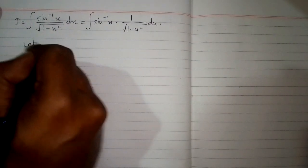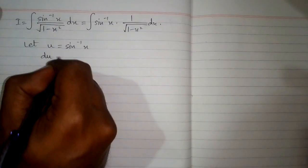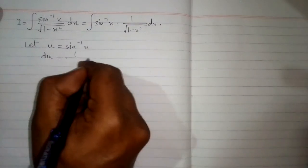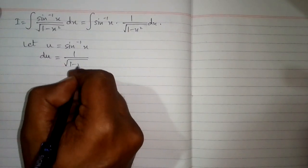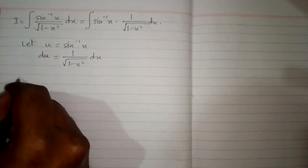Now let u is equal to inverse sine of x, so the differential du is equal to the derivative of inverse sine of x, which is 1 upon square root of 1 minus x square multiplied by dx.